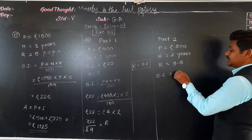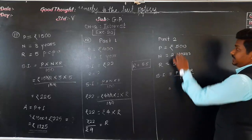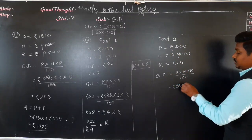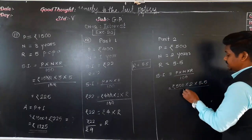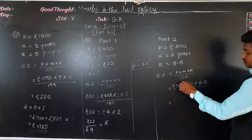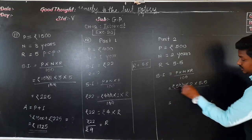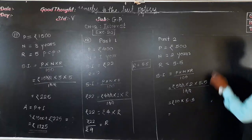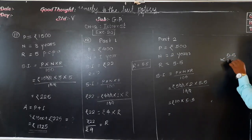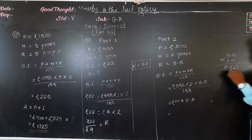Applying the simple interest formula: P into N into R upon 100 = 500 into 2 into 5.5 upon 100. The two zeros cancel, leaving 5 twos are 10 into 5.5. Rupees 10 into 5.5 — multiplying 5.5 by 10 gives rupees 55. So the interest is rupees 55.